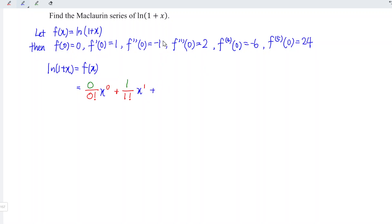we have next, this is negative 1, second order, 2 factorial x to the power of 2. We have third,